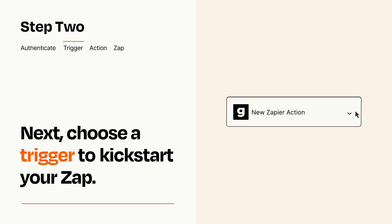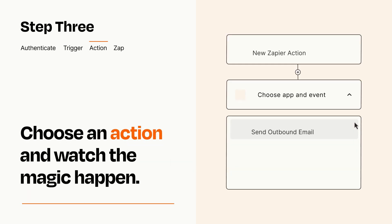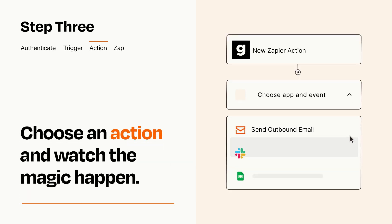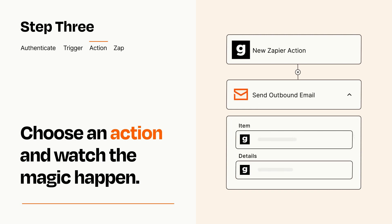This last part is where the magic happens. Choose the action you want to happen in your target app. You'll see a bunch of fields where you can specify the details of your Zap. You can type free form text or pull data in from your trigger step as needed.